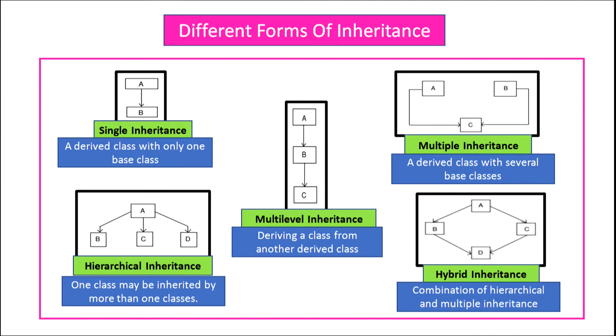Hybrid inheritance is a combination of hierarchical and multiple inheritance. In the figure, A is the base class, B and C are child classes of A, and D is a child class for which B and C are the base classes. This is hybrid inheritance.